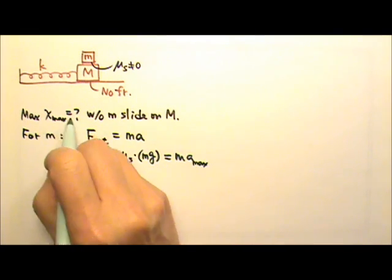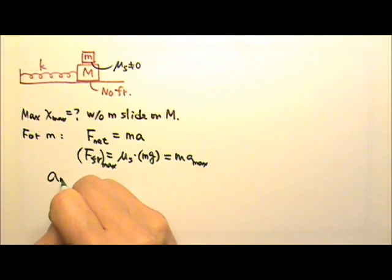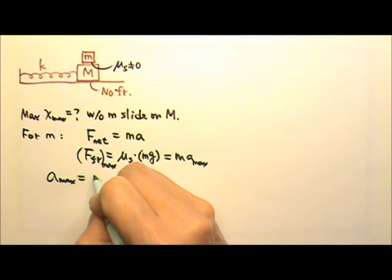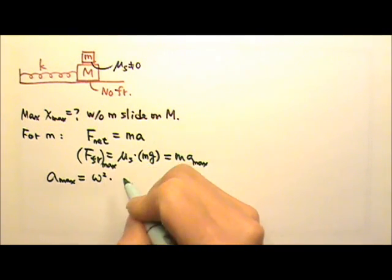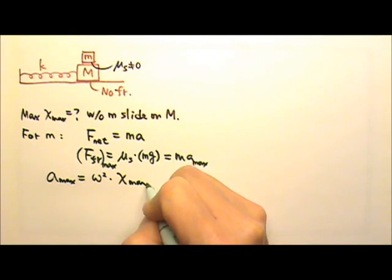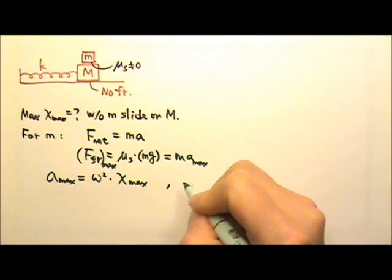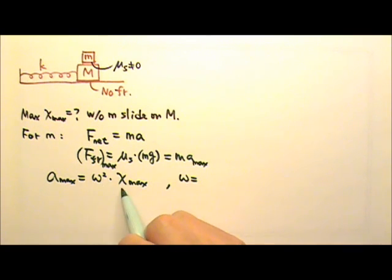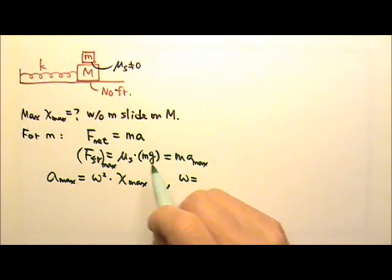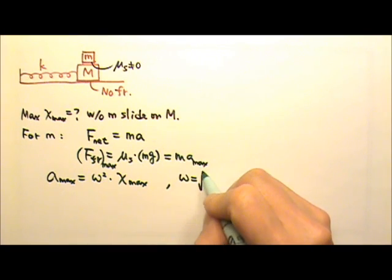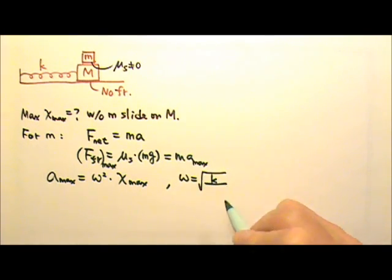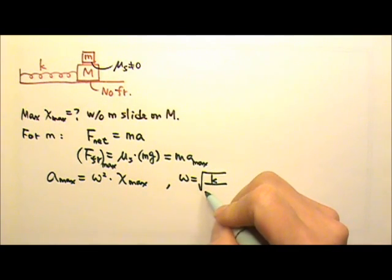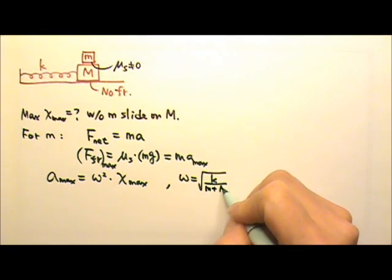To find the amplitude, the maximum possible acceleration equals omega-squared times the maximum possible amplitude. We need to find omega to solve for the amplitude. Omega is the square root of k over the total mass. Because the two boxes oscillate together, the mass has to be little m plus big M.